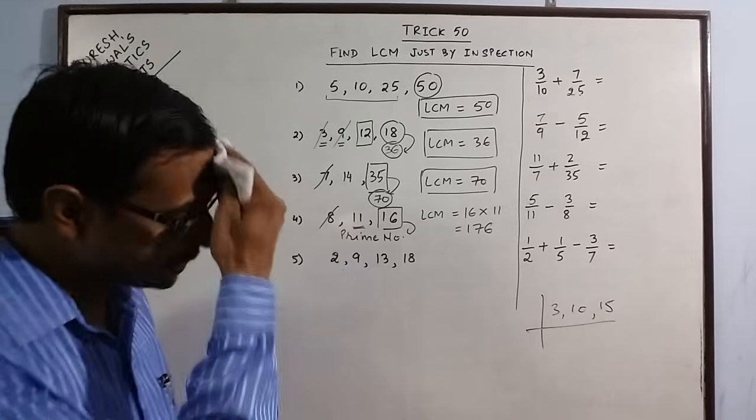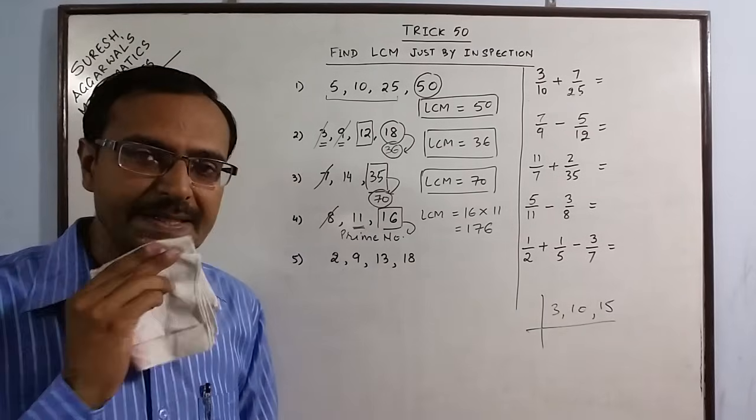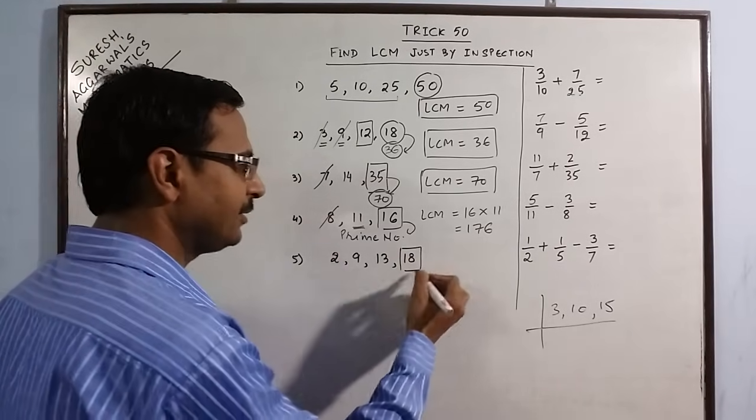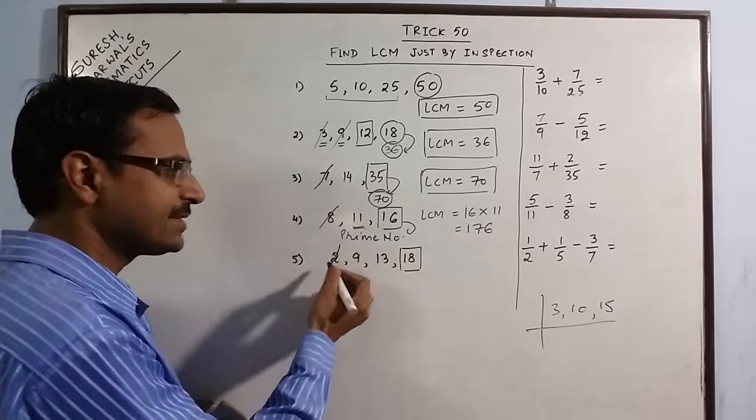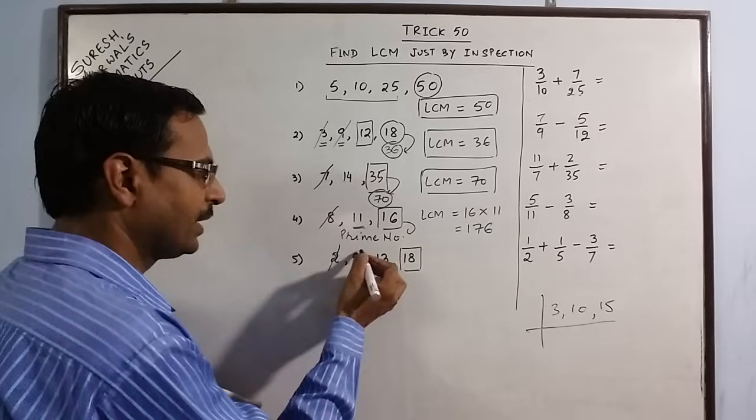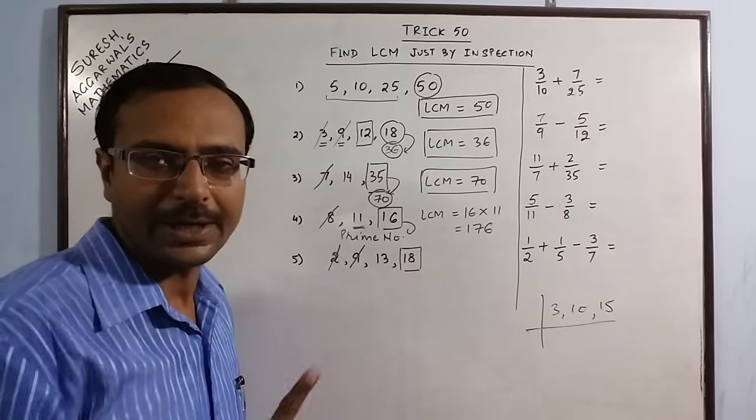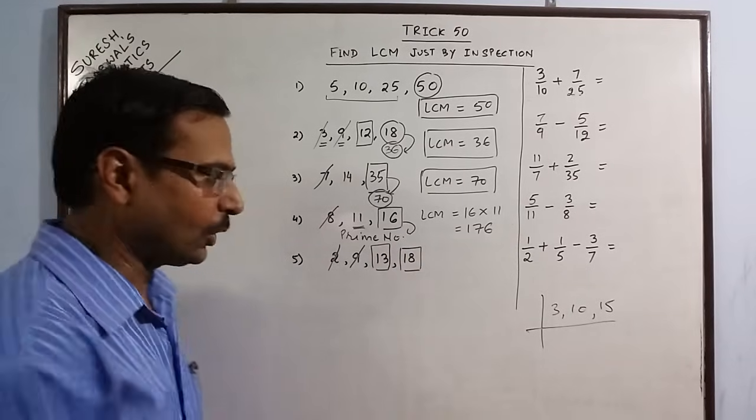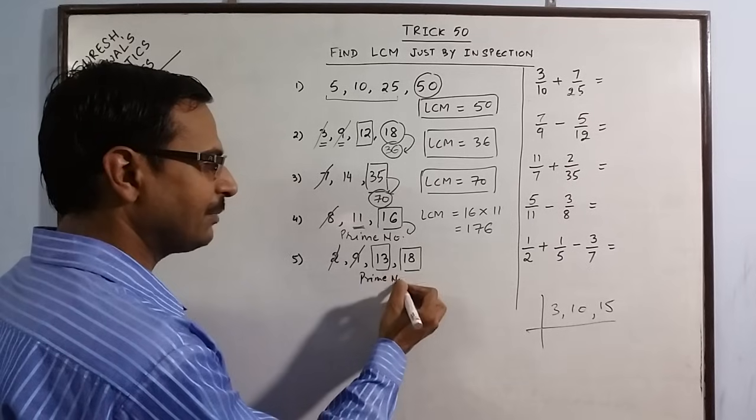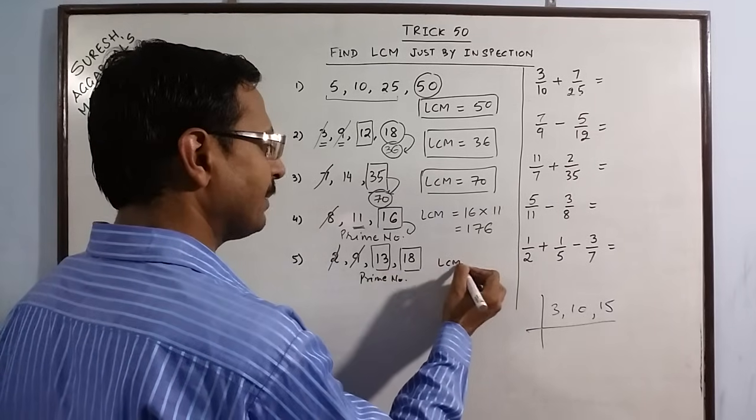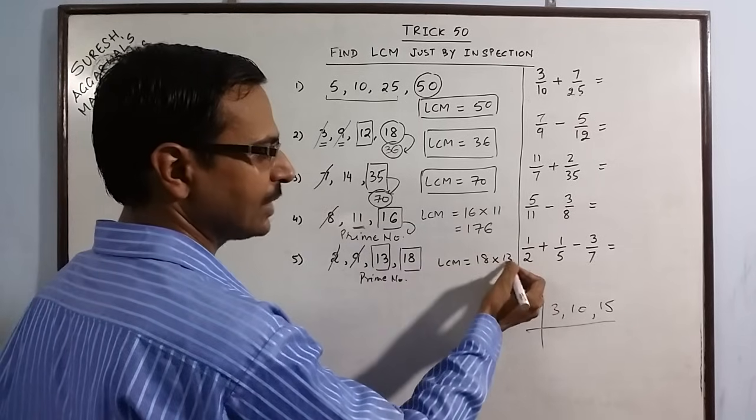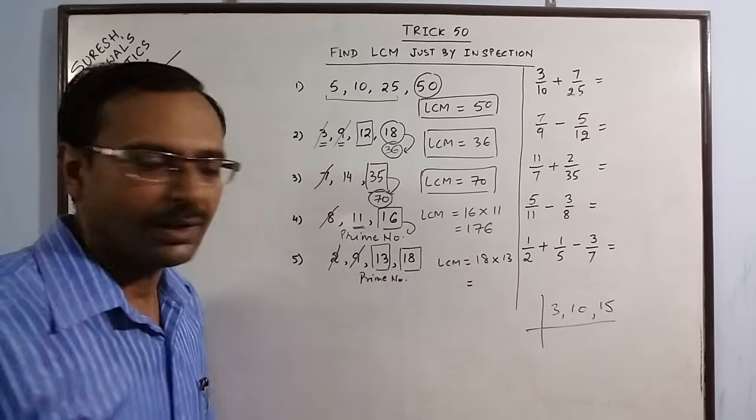Let us take one more example: 2, 9, 13 and 18. In this case we have the highest number as 18. 2 is a divisor of 18, 2 nines are 18. 9 is a divisor of 18, 9 twos are 18. Only thing we are left with is 13. Now 13 is a prime number. Whenever we have a prime number we just multiply the highest number with the prime number. So that will give us the required answer.